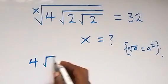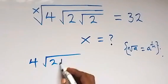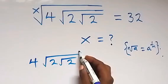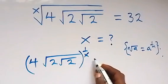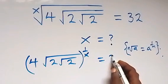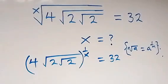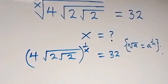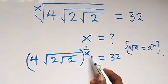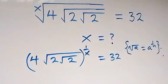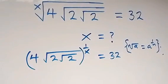...hence the root of 2, then root 2, raised to power 1 over x, equals 32. That is, the x-root expression is written as raised to the power 1 over x. In the next step, let's raise both sides to power x — so we have 4 and square root of 2...